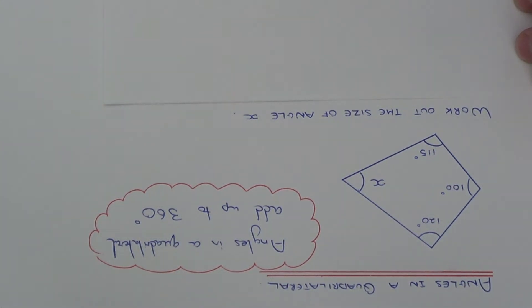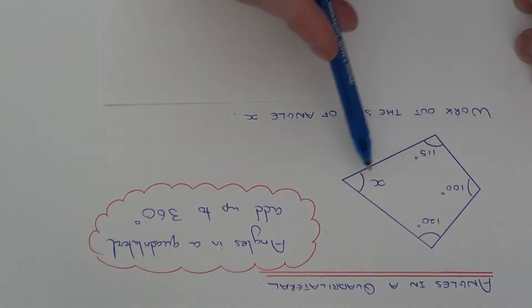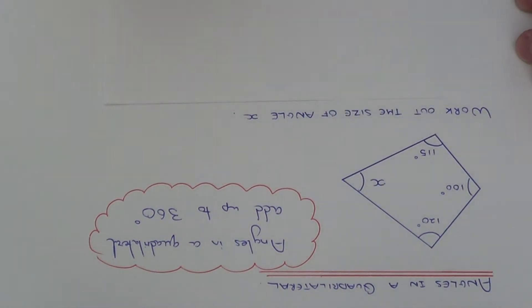A quadrilateral is a four-sided shape, and if you add up all the angles inside a quadrilateral, then the total will always be 360 degrees.